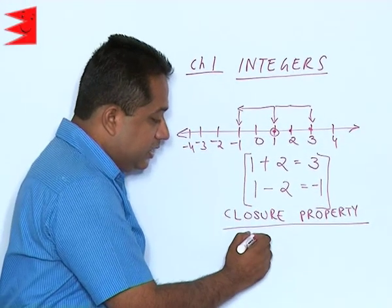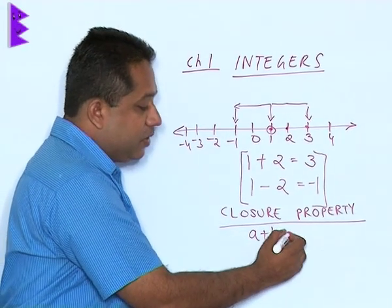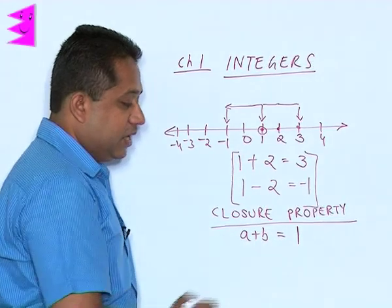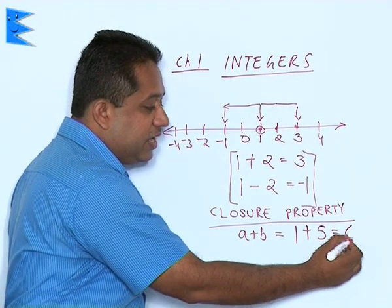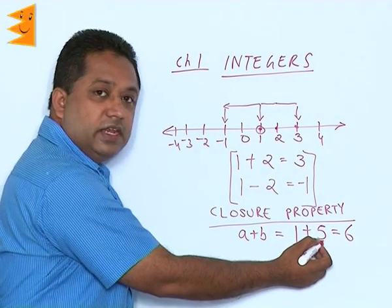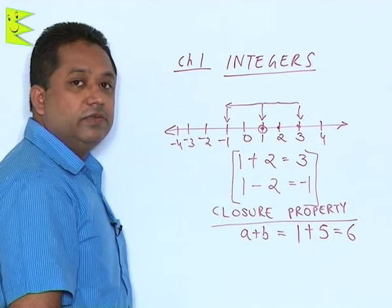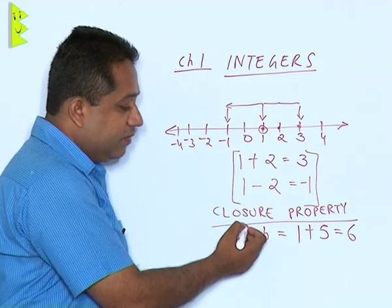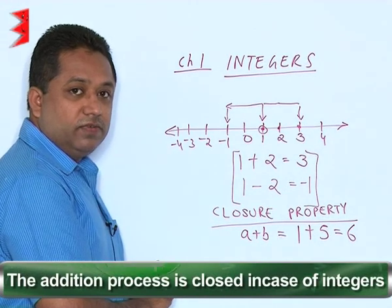Let us take an example where a is 1 and b is 5. When we add 1 plus 5, we get 6. So 1 is an integer, 5 is an integer, when we add both of them we again get 6, which is an integer. So we can say that the addition process is closed in case of integers.